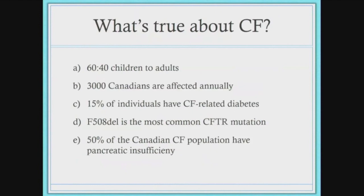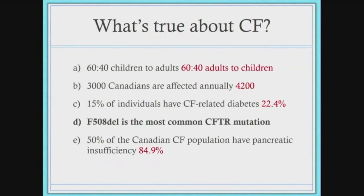I look at airway infection in the context of cystic fibrosis. The most common CFTR mutation is F508 delta. There are five different classes of mutations. This one is a processing mutation — the protein is made but not properly folded — and due to this mutation, there's a chloride imbalance which causes a lot of the subsequent symptoms that a CF individual experiences.